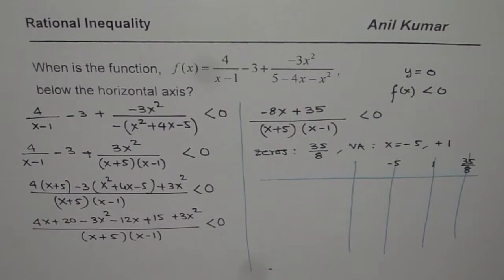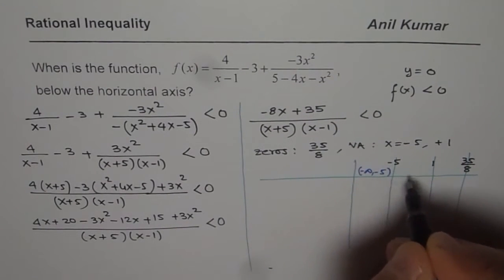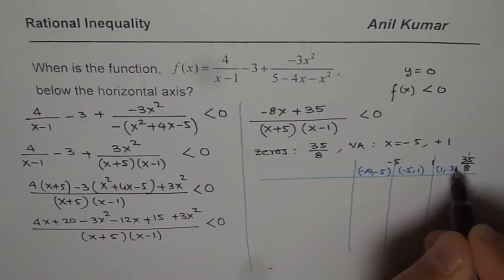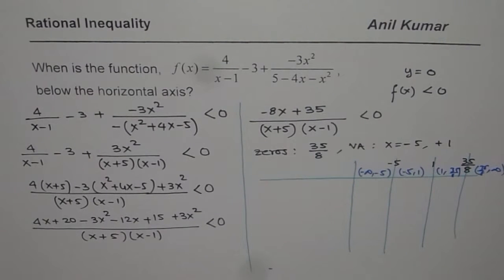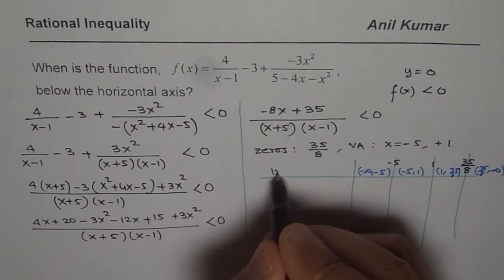Now the intervals which it divides into are from minus infinity to minus 5. This one is from minus 5 to 1. Then from 1 to 35 over 8. And then from 35 over 8 to infinity. So these are the 4 intervals. In each interval, we will take test points. So these are the intervals for us.